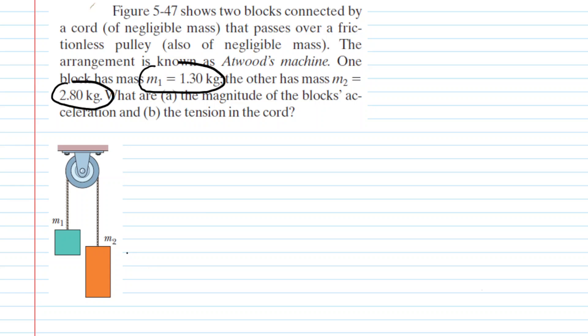So in other words, block 2 is going to be accelerating downward, we can label that a, whereas block 1, which is less massive, is going to be tugged upward. We can label its acceleration as a, but pointing up.